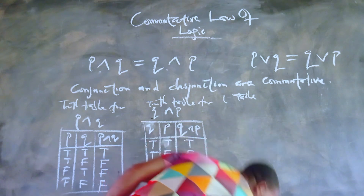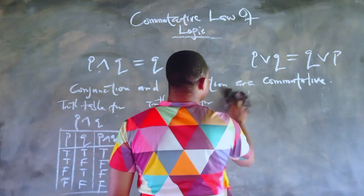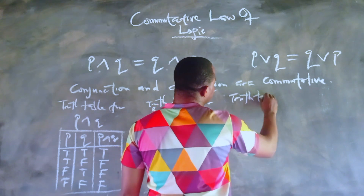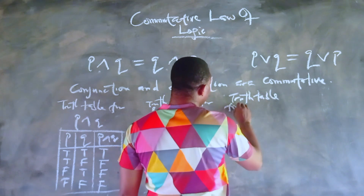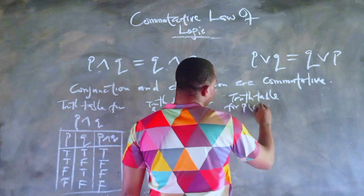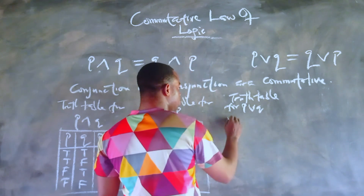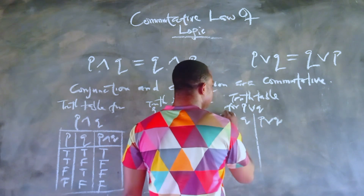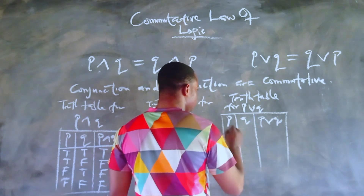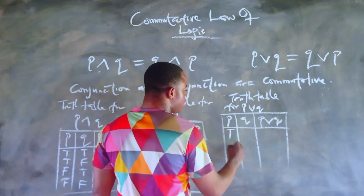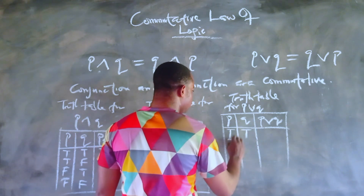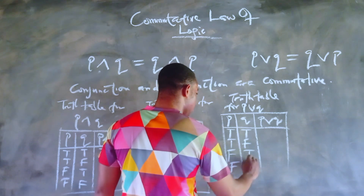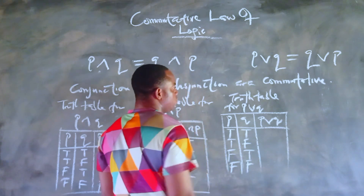Let's go on and see the other part of this law for disjunction — the OR statement. P or Q is equal to Q or P. Let's draw the truth table for P or Q first. We need P, Q, and P or Q on the table. The four possible conditions are: true/true, true/false, false/true, and false/false as the truth values for P and Q respectively.